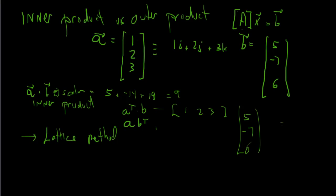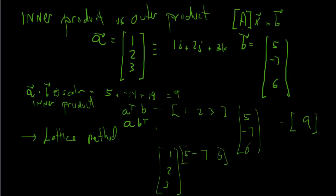That turns out with a scalar answer. But if instead we do it this way — 1, 2, 3 times 5, minus 7, 6 — we're going to get a different answer entirely. We're going to get a matrix. This is 3-by-1 times 1-by-3, so we get a 3-by-3 matrix. In that matrix, the i times i, j times j terms end up on the diagonal. That's the inner product. The numbers off-diagonal effectively do the cross product — that's this whole thing called the outer product.